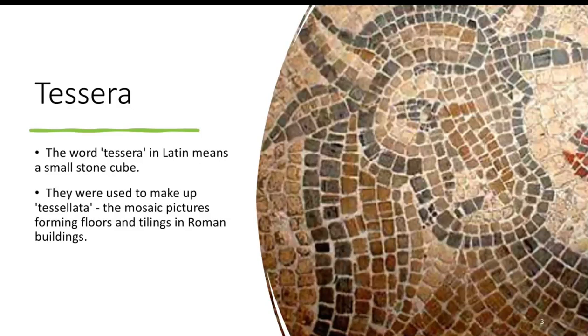The word tessera in Latin means a small stone cube. They were used to make up tessellata, the mosaic pictures forming floors and tilings in Roman buildings. You can see an example to the right.